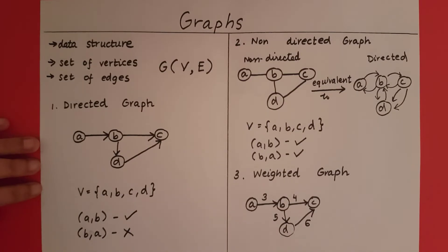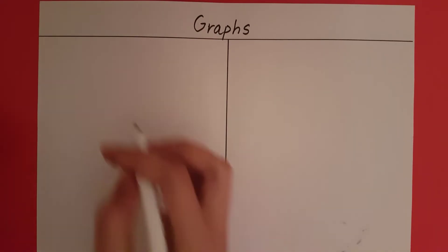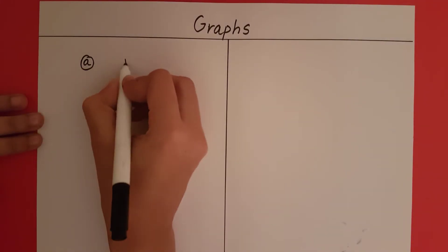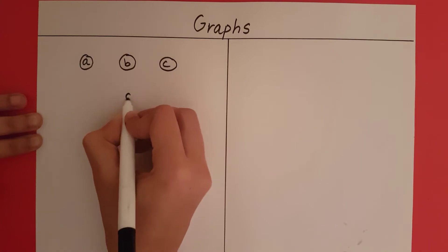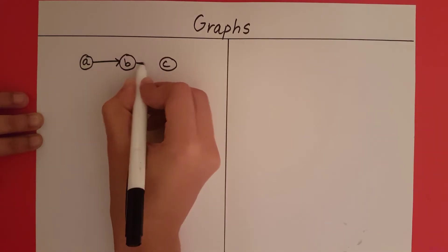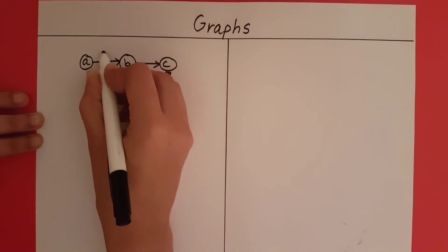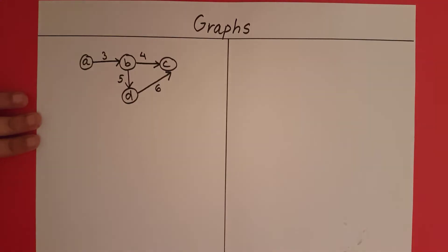So these are the three major types of graphs that you should know. Now let's look at how we are going to implement this graph data structure. Let's say that the graph we want to implement is this — it is going to be a weighted directed graph. There are two ways to implement graphs.